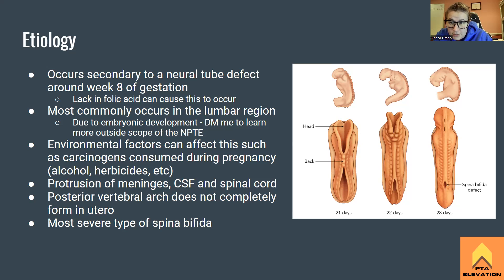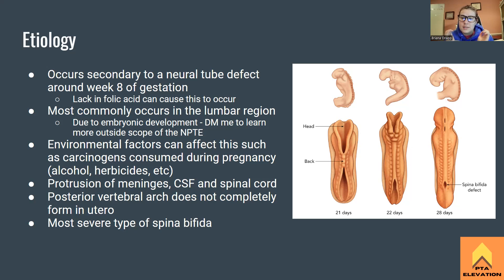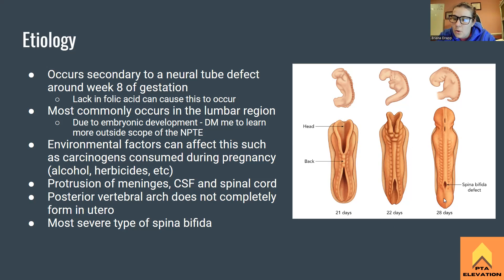We develop caudorostrally — basically, we were all at one point just a butthole and developed all the way up to our mouth. The same kind of thing happens with our back: the neural tube folds in on itself. All you need to know for the boards is this is why spina bifida happens in the lumbar spine. As we're developing, the neural tube closes starting from the bottom going up, and sometimes it doesn't completely close, which is why we see spina bifida in the lumbar region.